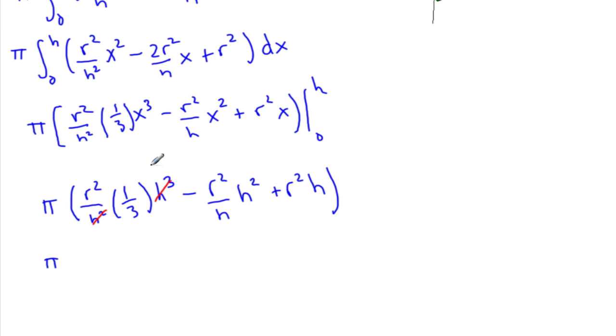After simplifying the h terms, we'll have 1/3 r²h minus r²h plus r²h. You can see the last two terms cancel, and we're left with 1/3 π r²h, which is our formula.